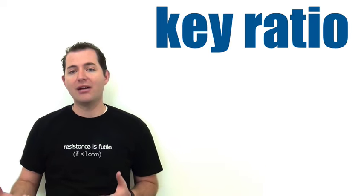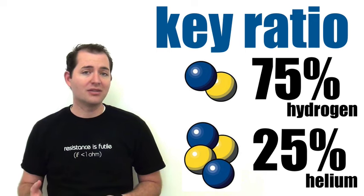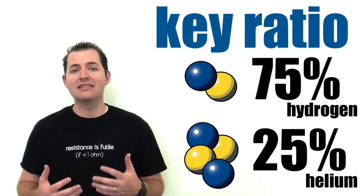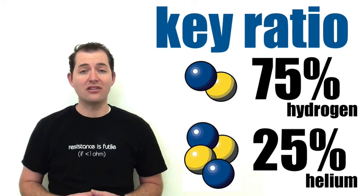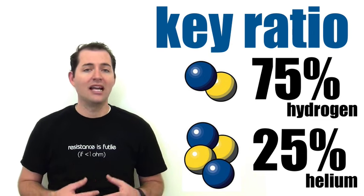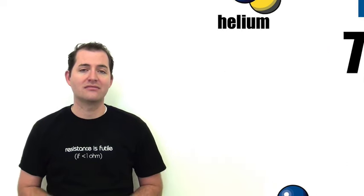Both three minutes after and 300,000 years after the big bang, there was a key ratio that happened: 75% hydrogen and 25% helium. This same ratio of hydrogen to helium is seen today in our universe and serves as key evidence of the big bang. This formation of hydrogen and helium no longer takes place in large events in our universe, so basically all of the hydrogen and helium we have originated from the big bang.